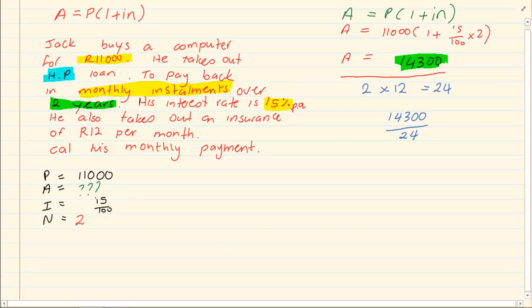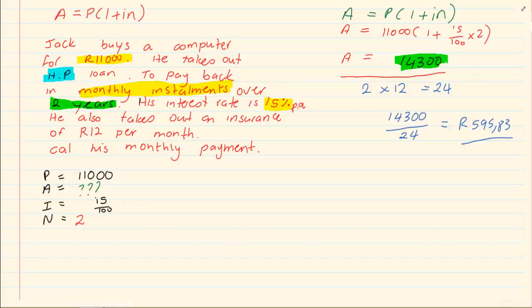So you are going to take 14,300 divided by 24, which gives us his monthly payment back on the interest and loan of 595.83 cents.